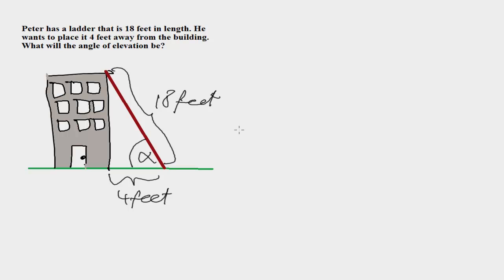So the equation we will have will be cosine of alpha equals the adjacent side, which is 4, over the hypotenuse, 18.